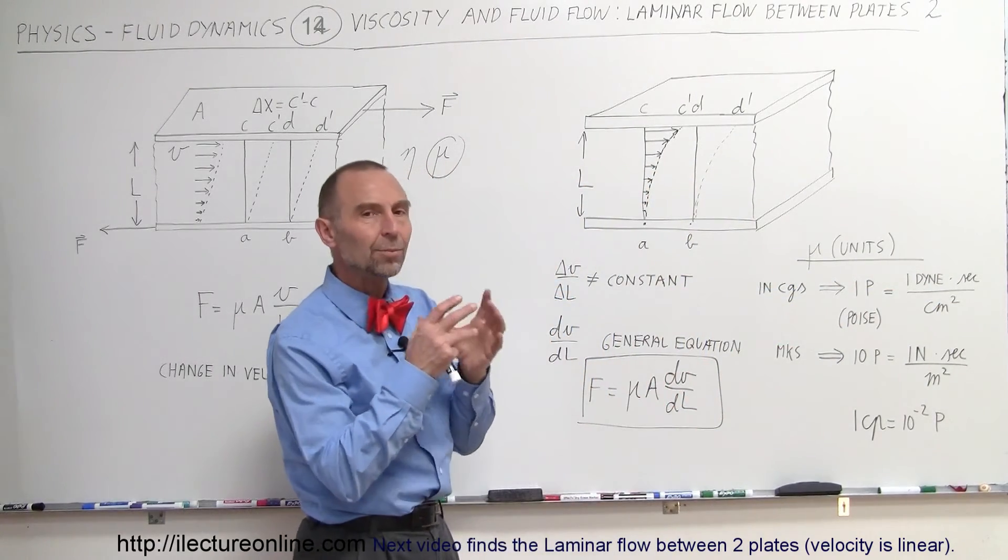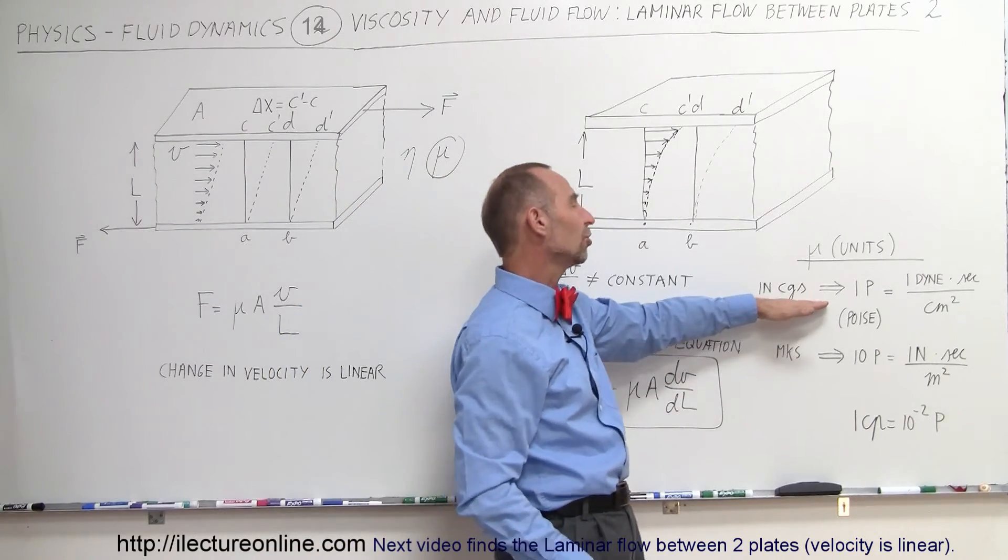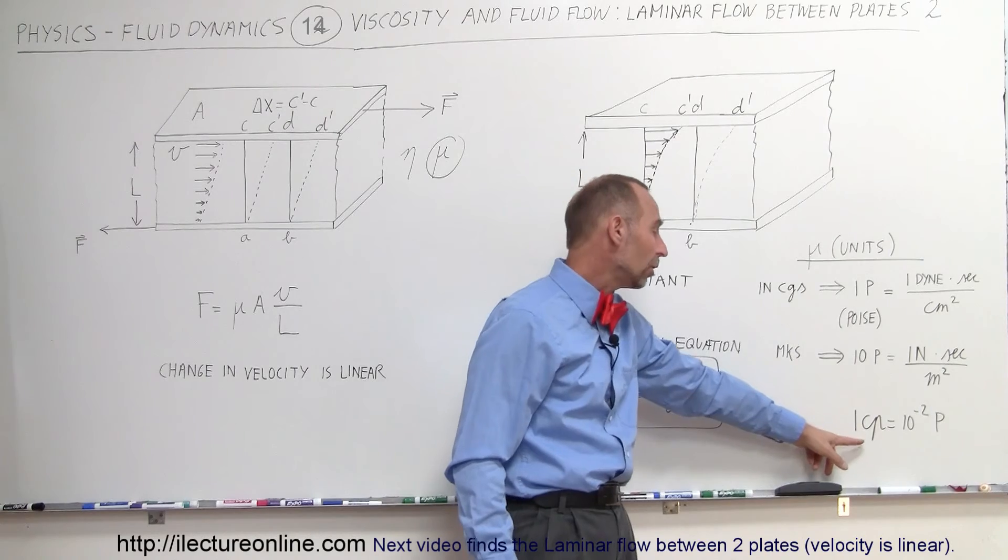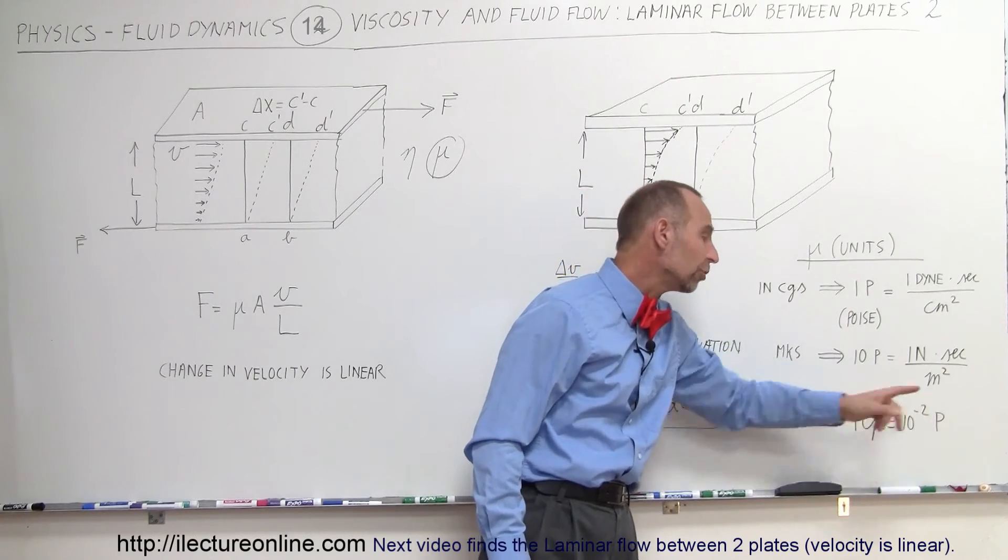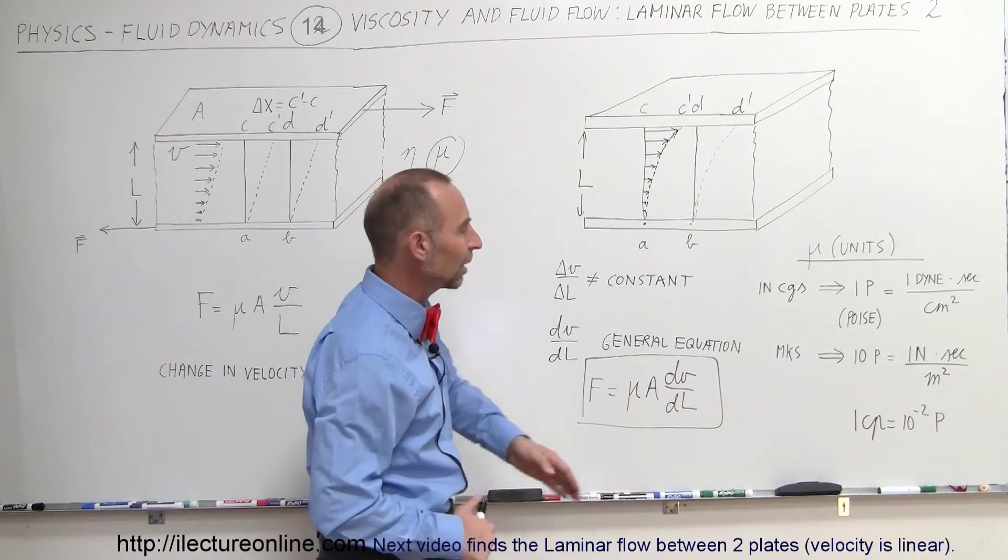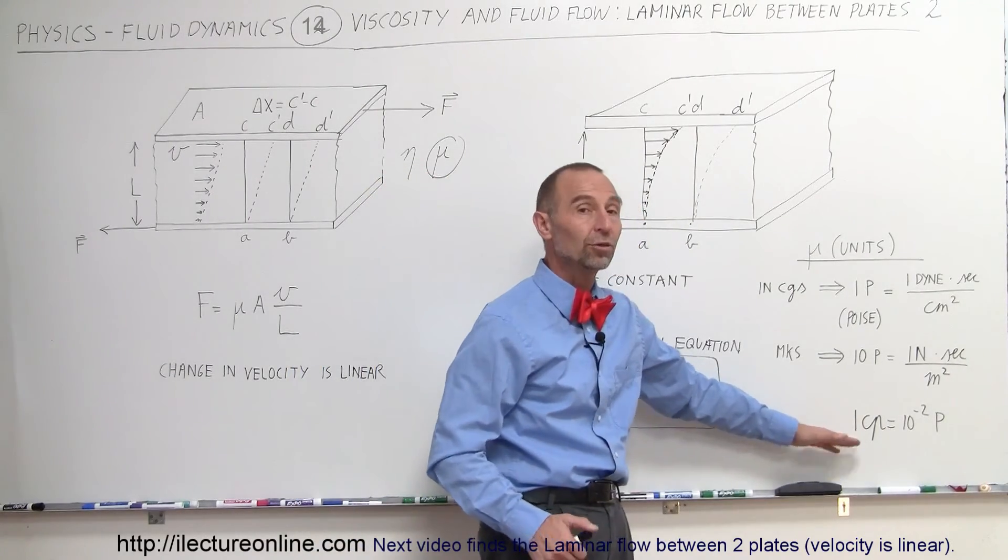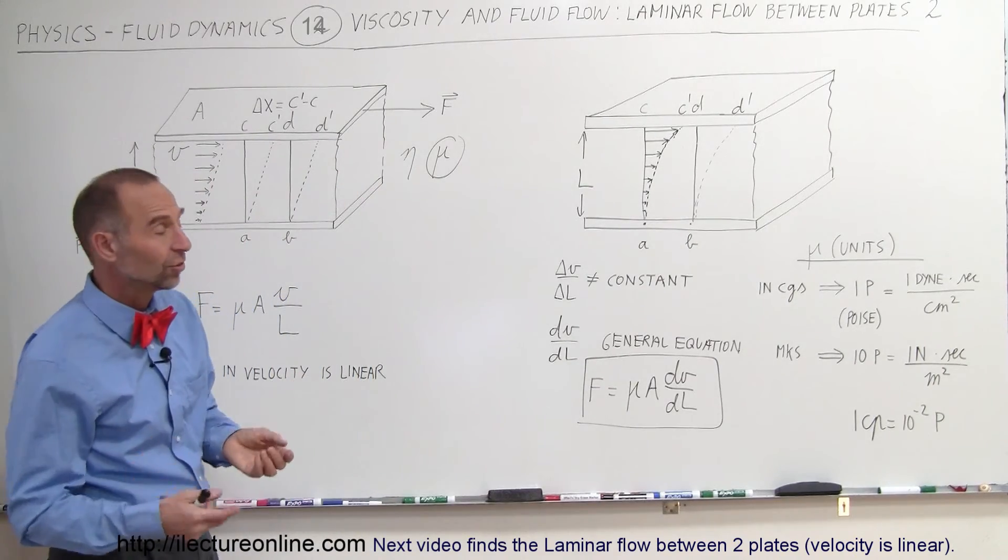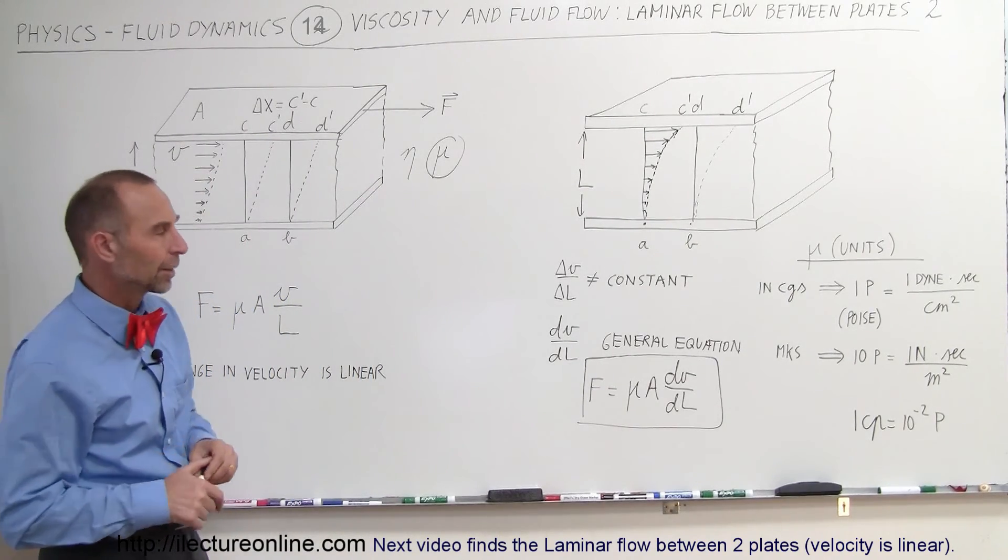Most of the experiments are done in a miniature scale so CGS units tend to be quite common when we talk about viscosity. There's also what we call a centipoise which is 10 to the minus 2 poise, and sometimes we even use units in micropoise for fluids that do not have much viscosity at all such as gases.